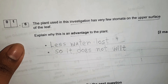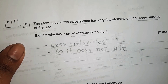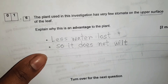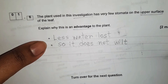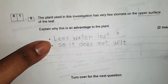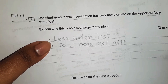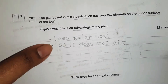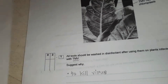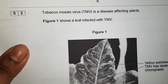The plant used in this investigation has very few stomata on the upper surface of the leaf. Explain why this is an advantage to the plant. We need to write down the advantage: less water is lost, so the plant does not wilt.